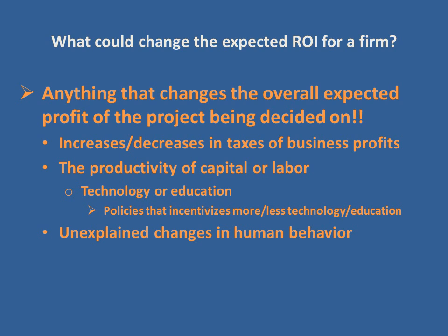The last factor is unexplained changes in human behavior — firms simply deciding the economy is going to go south or that they're ready to pull back on investment. Keynes called this 'animal spirits.' You might see that term used when we talk about changes in the overall expected future profit of any project a firm is deciding whether or not to take on.